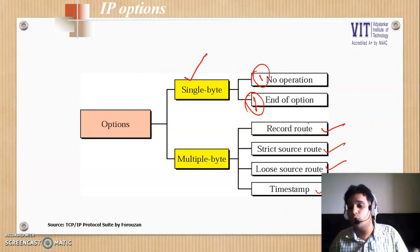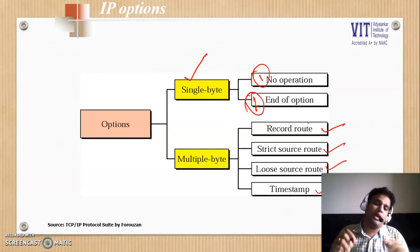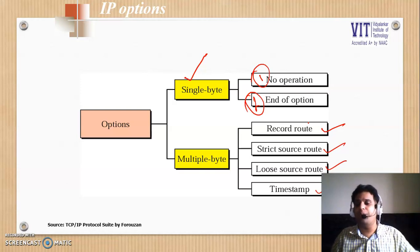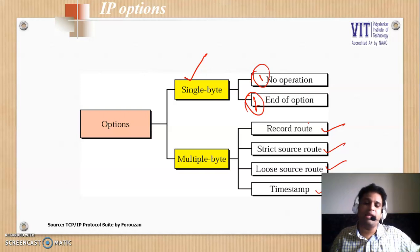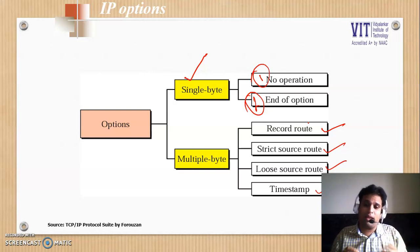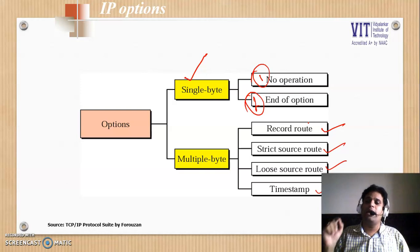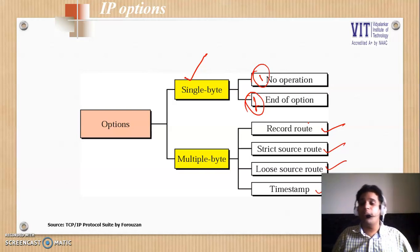For example, A is sending a packet to B and it is visiting router R1, router R2, router R3, and then reaching B. Whenever the packet goes to R1, it will enter its IP address, then it will go to R2 and enter its IP address, then R3 will enter its IP address, and then it would go to B.